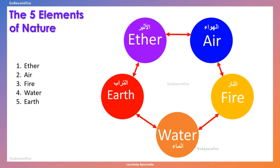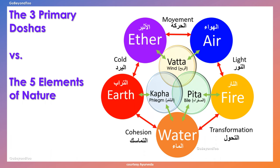When we combine the three primary doshas with the five elements of nature, we get a relationship between each of the doshas and each of the earth elements. Vata is primarily the ether and air elements. Pitta is fire and water. Kapha is water and earth.